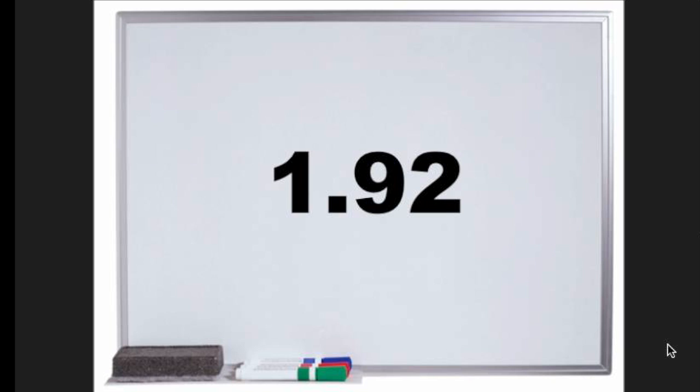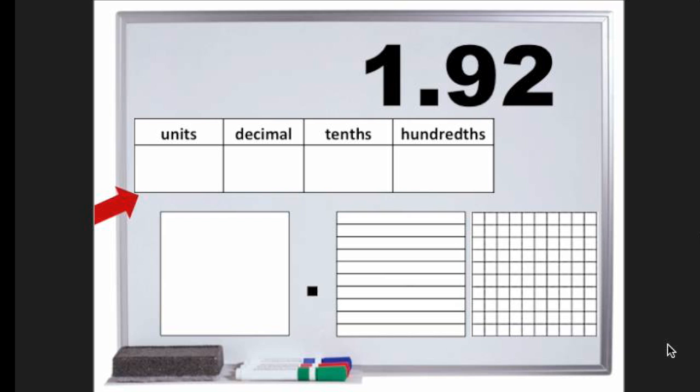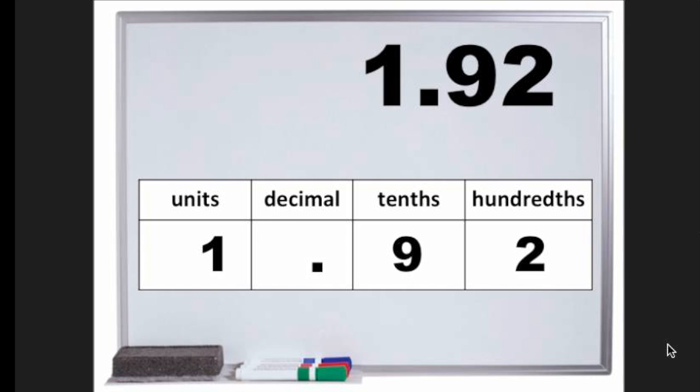In activity 1, you learn about tenths and hundredths. In this activity, you will have to fill in the place value table and colour in one of the grids. This is how 1.92 looks in a place value table. We have our 1 unit or whole, our decimal in our decimals column, we have 9 tenths and 2 hundredths.